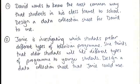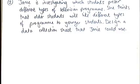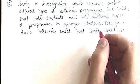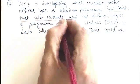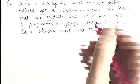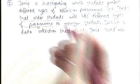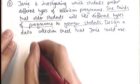The second question says: Janey is investigating which students prefer different types of television program. She thinks that older students will like different types of program to younger students. Design a data collection sheet that Janey could use. Quite critically, there are two different things Janey needs to know: she needs to ask each person how old they are, and she needs to know what type of program those people like, because she's going to try to correlate the two. In this type of situation, the data collection sheet you need is called a two-way table.